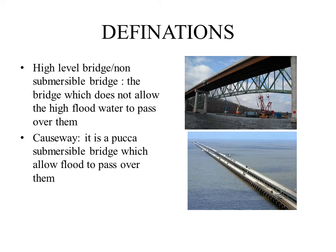Bridges are of various types: high level bridges, causeways, non-submersible bridges, deck bridges, etc. The high level bridge, also called a non-submersible bridge, does not allow flood water to pass over the deck. The causeway is a submersible bridge which allows flood to pass over it.